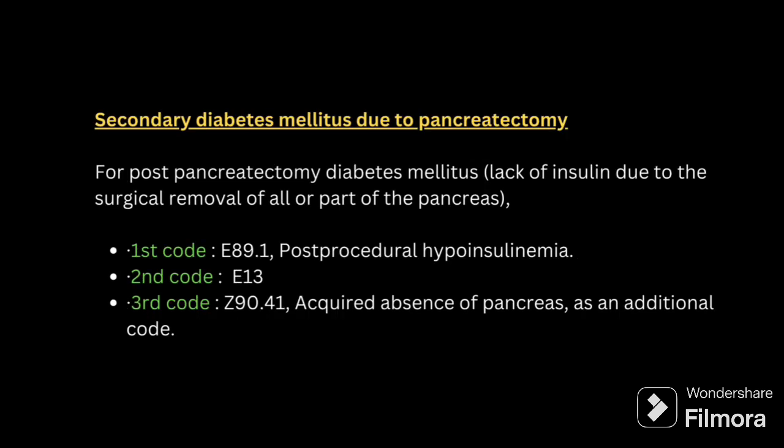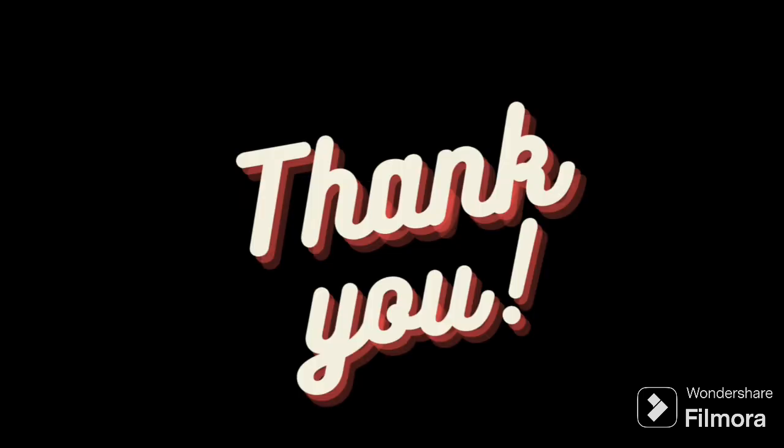Next is secondary diabetes due to pancreatectomy. Pancreatectomy means removal of the pancreas. The function of the pancreas is production of insulin. So if the pancreas is removed and the patient is getting secondary diabetes, first you have to code post-procedural hypoinsulinemia — that is after the procedure, insulin production is reduced. Second, code for secondary diabetes, and third, code for absence of pancreas.